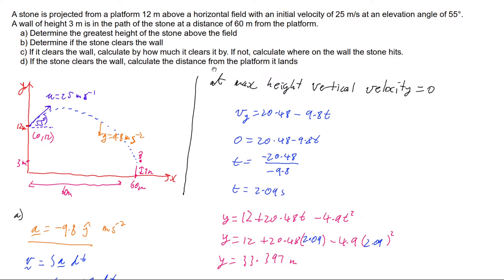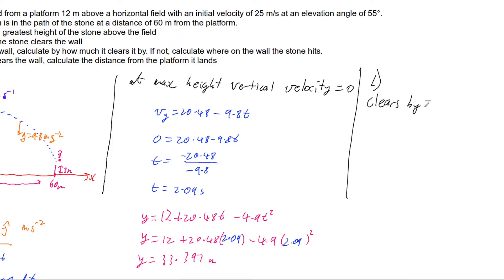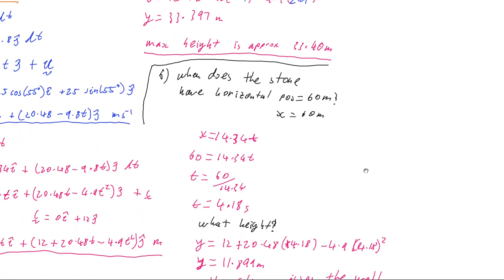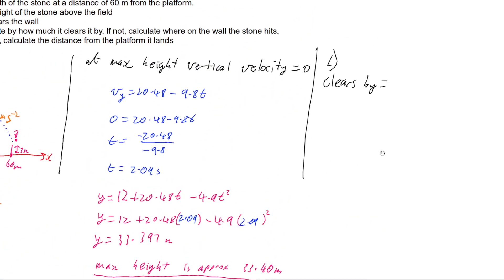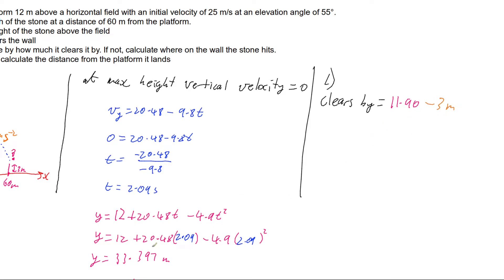For part c, since the stone did clear the wall, we can find by how much. The stone was at 11.899 meters, which we round to 11.9 meters, minus the wall height of 3 meters, giving us a clearance of 8.9 meters. So the stone clears the wall by approximately 9 meters.